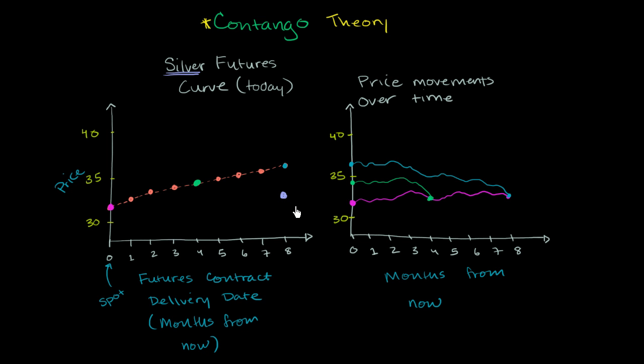So this right here is the expected price of silver in the market. And you can see from this futures curve that the silver futures contract for delivery eight months from now is trading above that. It's trading above the expected price.